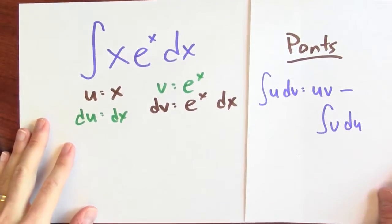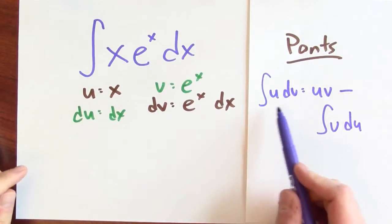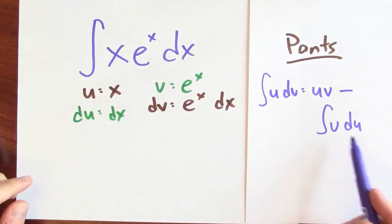Now I've got u, dv, v, and du. We can put it all together. Parts tells me that an anti-derivative u dv is uv minus anti-derivative v du.